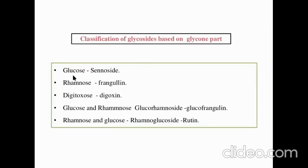Classification of glycosides based on the glycon part: glucose glycosides, example synoside; rhamnose glycosides, example frangulin; digitoxose glycosides, example digitoxin and digoxin; glucose and rhamnose glycosides — glucorhamnosides, like glucofranglin; rhamnose and glucose — rhamnoglucosides, example rutin. These examples are compulsory to remember.